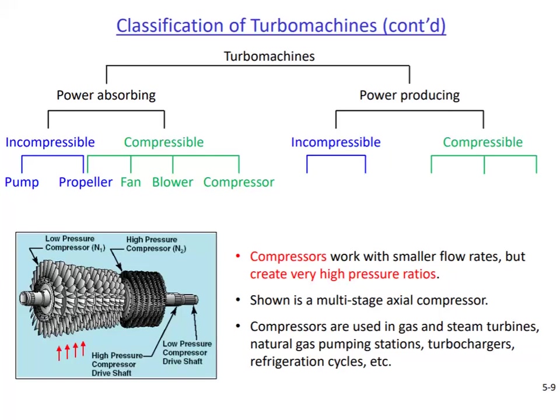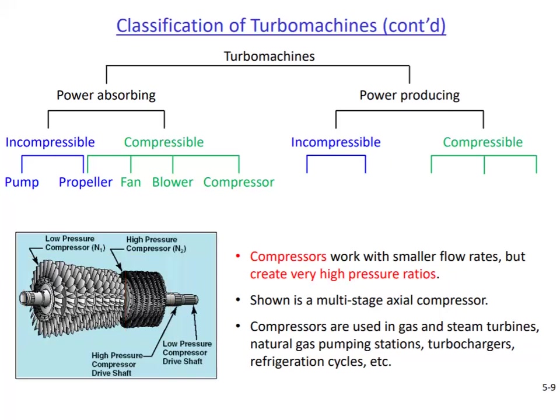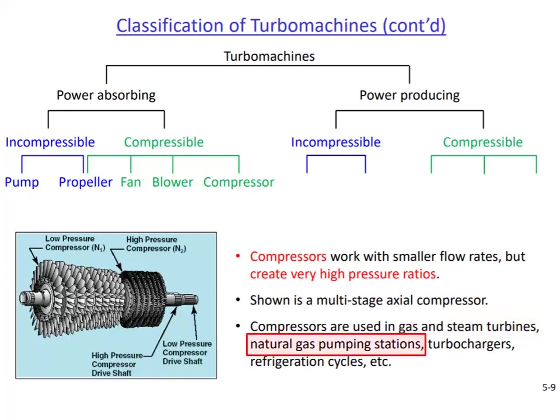The multi-stage axial compressor has several rows of blades attached to the shaft with a low pressure and a high pressure part — the required pressure ratio is so high that it can only be achieved using both parts together. Compressors are used in several applications such as inside gas and steam turbines in power plants or in aircraft engines. They are also used in natural gas pumping stations so that gas can be carried hundreds of kilometers inside pipes.